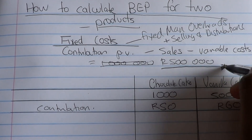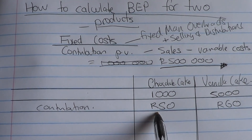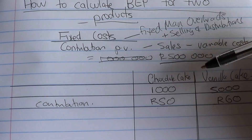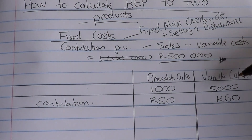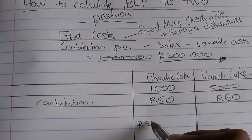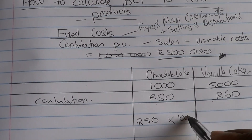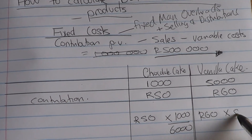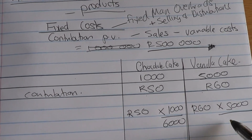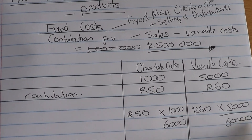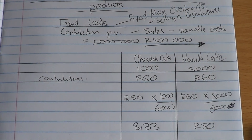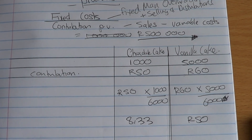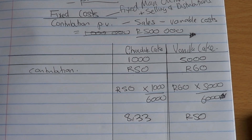However, the contribution needs to be split according to the ratio of how many chocolate cakes you're going to sell and how many vanilla cakes you're going to sell. For chocolate cake, it will be 50 rand times 1,000 divided by 6,000. And for vanilla cake, it will be 60 rand times 5,000 divided by 6,000. That gives a contribution of 8 rand 33 for the chocolate cake and 50 rand for vanilla cake. Remember, this is contribution per cake.